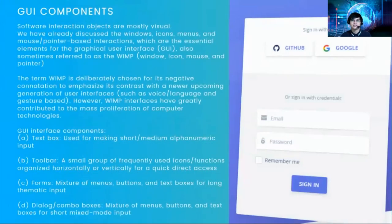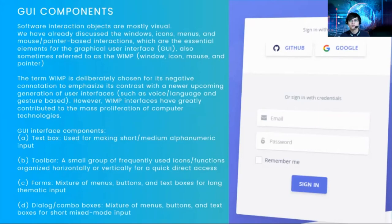Next are the GUI components. We are very familiar with graphical user interfaces — you can see icons, windows, and menus. Software interaction objects are mostly visual. Windows, icons, menus, and mouse or pointer-based interactions are the essential elements of the GUI. This is sometimes referred to as WIMP — Window, Icon, Mouse, and Pointer. The term WIMP is deliberately chosen for its negative connotation to emphasize its contrast with a newer generation of user interfaces, such as voice, language, and gesture-based interfaces. However, WIMP interfaces have greatly contributed to the mass proliferation of computer technologies.